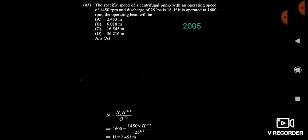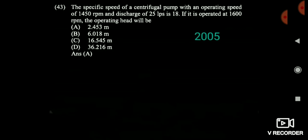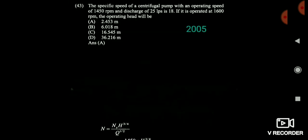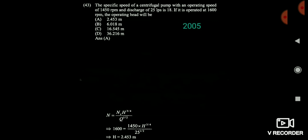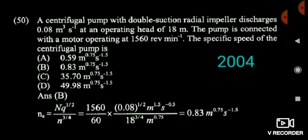The next question: operating speed is 1560 RPM per minute and operating head is 18 meter. It asks for the specific speed. Convert 1560 RPM into per second by dividing by 60. Put the remaining values in meters and seconds. You can get the answer that is 0.83.